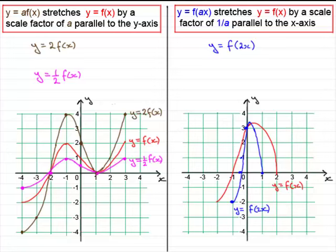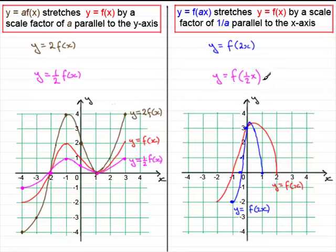Let's look at one more: y equals f of a half x. We replace any x in the equation for f of x with a half x. Here a is a half, so 1 divided by a half equals 2 — inverting the fraction. What this produces is a stretch of scale factor 2 parallel to the x-axis.